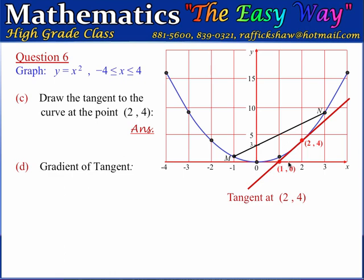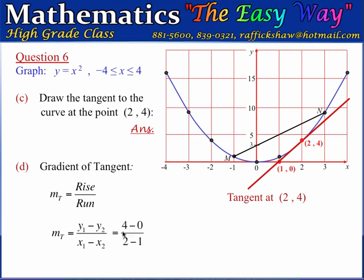Using the two known points on the tangent — (1, 0) and (2, 4) — the gradient equals the change in y divided by the change in x. That is (4 minus 0) divided by (2 minus 1), which equals 4 divided by 1. The gradient of this tangent is 4.